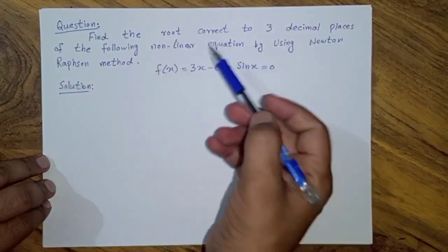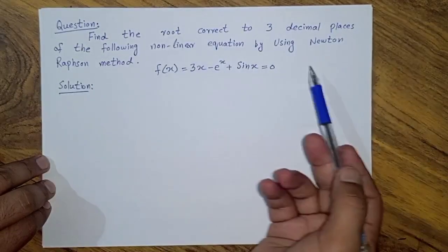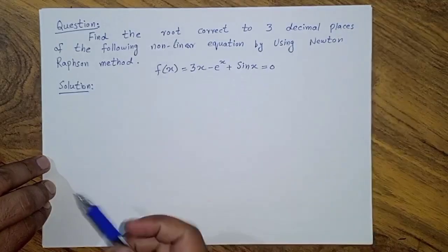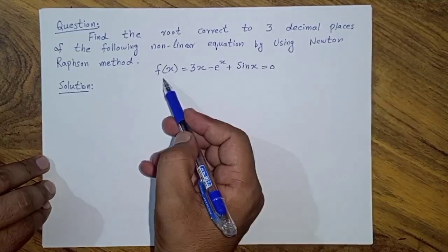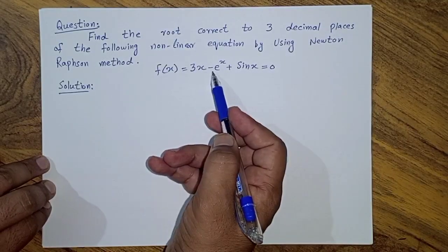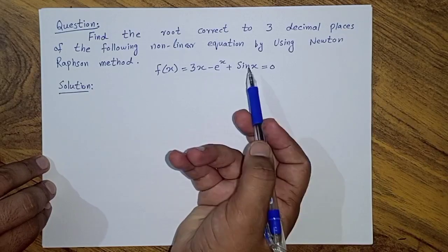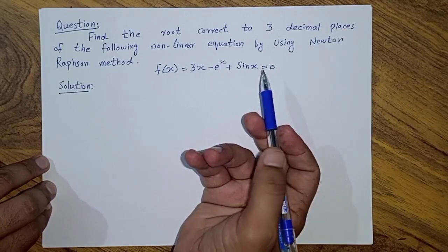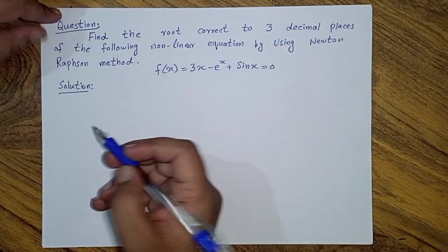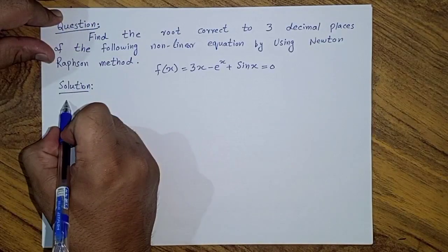Here is the question: find the real root correct to three decimal places of the following nonlinear equation using the Newton-Raphson method. f(x) = 3x - e^x + sin(x) = 0.